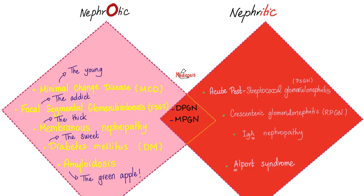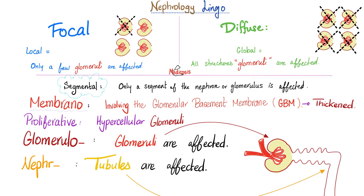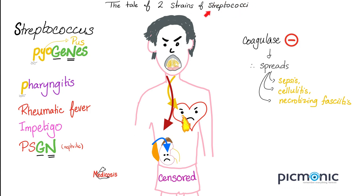Post-streptococcal glomerulonephritis falls in the nephritic syndrome category. There is diffuse involvement, meaning all glomeruli are affected, with hypercellular glomeruli, and sometimes the tubules too. There are two strains of streptococci: one causes pharyngitis, after which you can develop rheumatic fever or acute post-streptococcal glomerulonephritis. If infected with another strain causing skin infection — such as scarlet fever or impetigo — this strain can only affect the kidney, never the heart causing rheumatic fever. This is Streptococcus pyogenes, which is coagulase negative and can spread throughout the body.